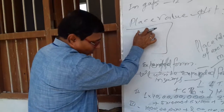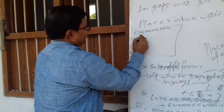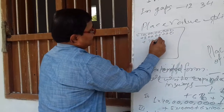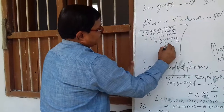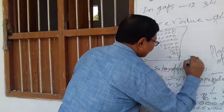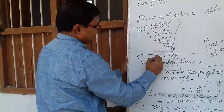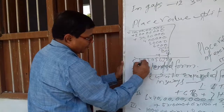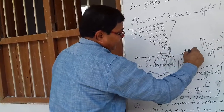The extended form of the standard form: ten crore plus two crore plus thirty lakh plus four lakh plus fifty thousand plus six thousand plus seven hundred plus eighty plus nine. So the standard form is 12,34,56,789 — twelve crores, thirty four lakhs, fifty six thousand, seven hundred eighty nine.